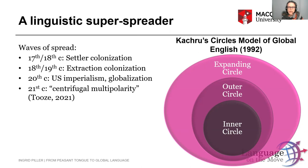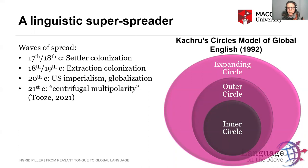By inner circle, he referred to countries such as the UK, US, and Australia, where English is spoken by the majority of the population as a first or native language and is pretty much the dominant language. Then he said that the inner circle was ringed by an outer circle of countries where English was used as an official language in the public space, but alongside other national languages. The examples he used for the outer circle were India, Nigeria, and Ghana. And finally, he said the outer circle is ringed by yet another circle — the expanding circle — where English is widely learned as a foreign language. His examples were China, Russia, and Germany.